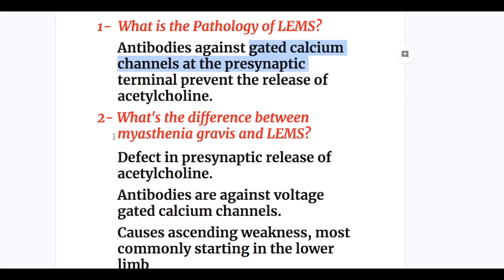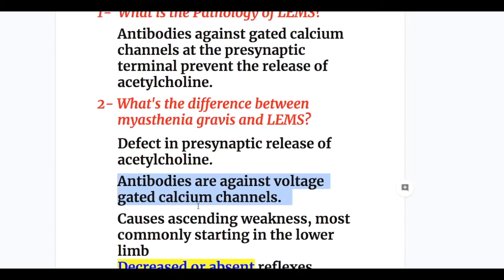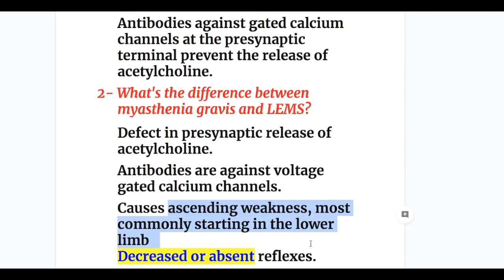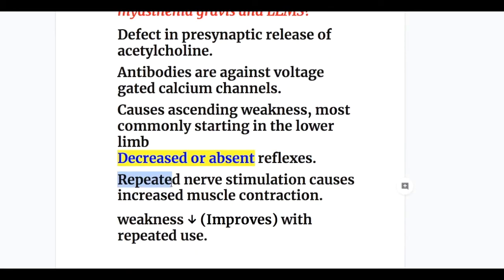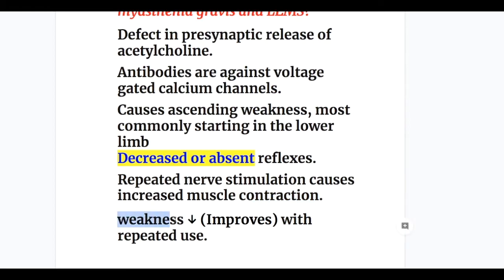Question two: what's the difference between myasthenia gravis and LEMS? In LEMS the defect is presynaptic release of acetylcholine, whereas in myasthenia the defect is postsynaptic. Antibodies in LEMS are against voltage-gated calcium channels. Weakness in LEMS most commonly starts in the lower limbs, whereas in myasthenia there is descending weakness starting in the eye muscles. In LEMS there are decreased or absent deep tendon reflexes, whereas in myasthenia they are normal. Repeated nerve stimulation in LEMS causes increased muscle contraction, whereas in myasthenia it causes increased muscle weakness or fatigue. Weakness decreases with repeated use in LEMS, whereas weakness increases with repeated use in myasthenia.